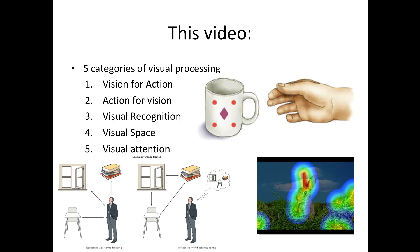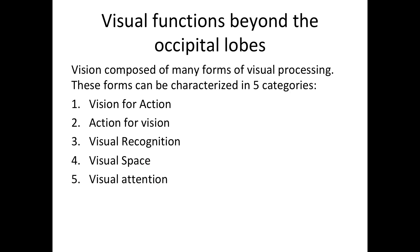In this video we're going to talk about five categories of visual processing: vision for action, action for vision, visual recognition, visual space, and visual attention. We're going to go through those one by one.